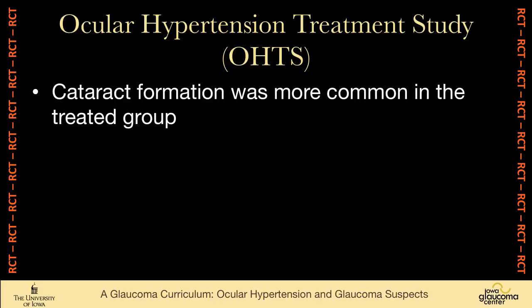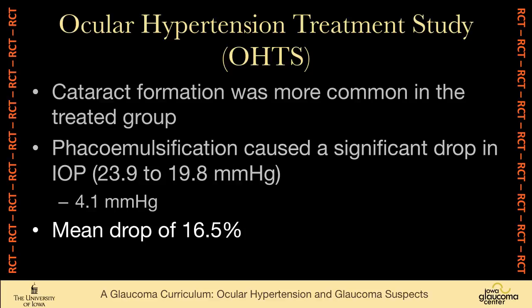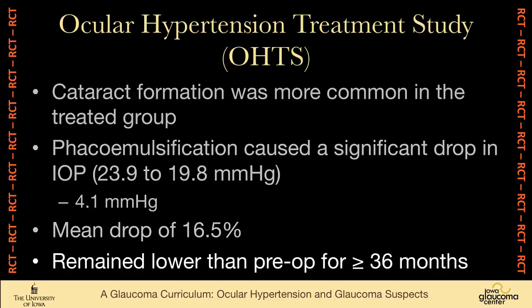Cataract formation was more common in the group that was treated. Another finding solidified by the OHTS is that when phacoemulsification is done in these patients — patients with ocular hypertension but not glaucoma — there was a significant drop in intraocular pressure, on average 4.1 millimeters of mercury or about 16.5%. And this remained lower than preoperative levels for 36 months.